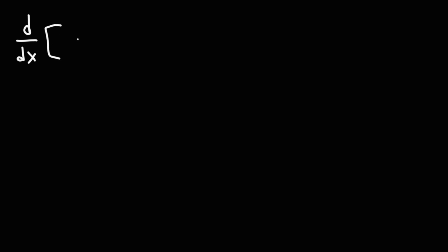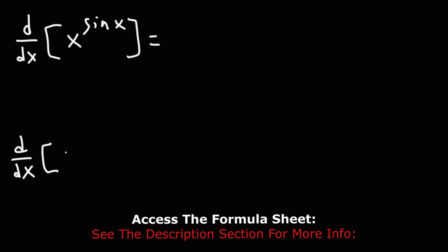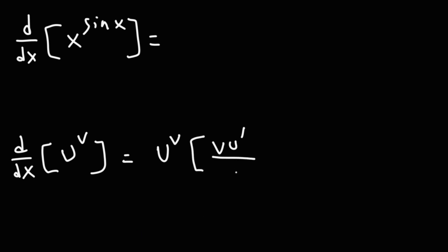Now let's move on to the next example. Let's say we want to find the derivative of x raised to the sine x. Feel free to pause the video if you want to try this example. I'm just going to rewrite the formula real quick. The derivative of u raised to the v is u to the v, times v times u prime divided by u, plus v prime times ln u.